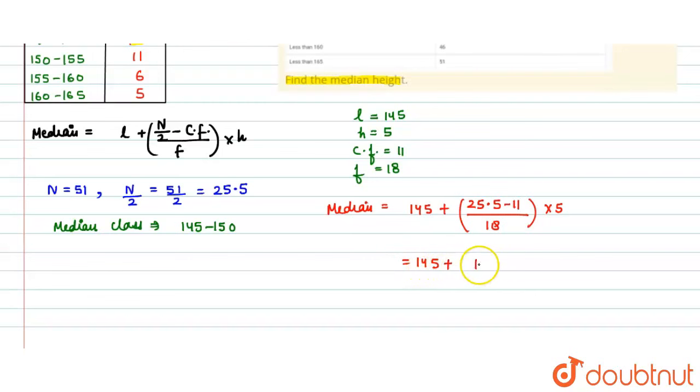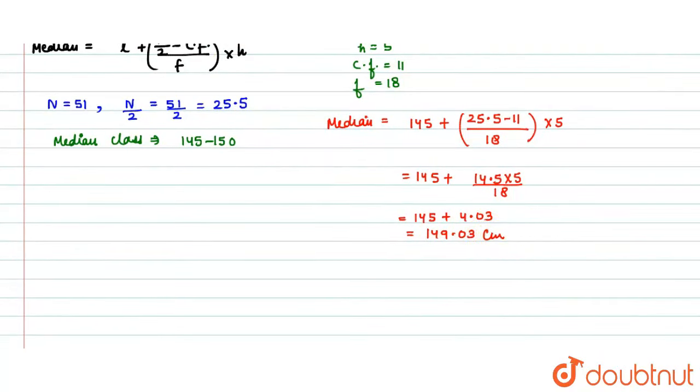The minus value is 145. You can write the default form. The n by 2 minus cf upon frequency. The multiple is 145, plus 145 plus 4.03, the answer is 149.03.